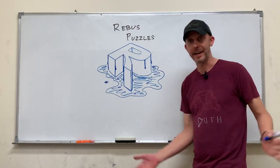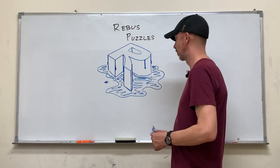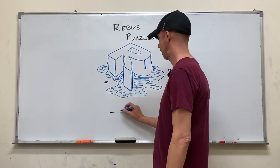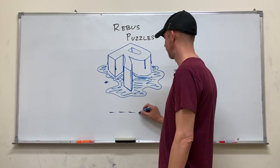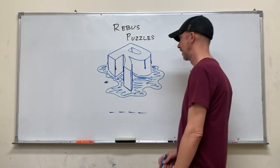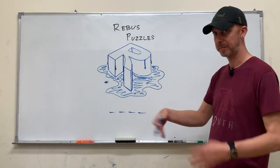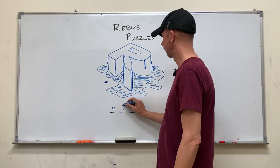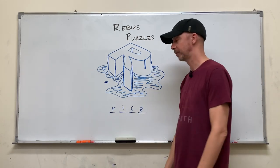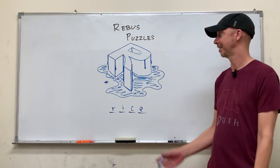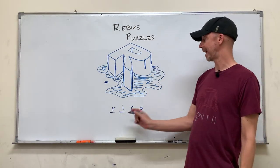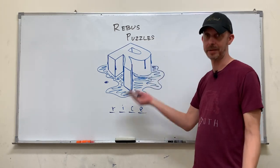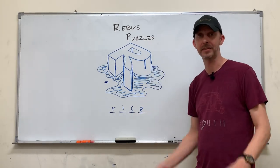If the entire class is struggling with a particular one, I might say okay, in that one there are only four letters in the answer, and then they might be able to work it out. After the time is up we go through the answers, and if somebody has something that isn't what I think it is but it makes sense according to the picture, they would also get a point.